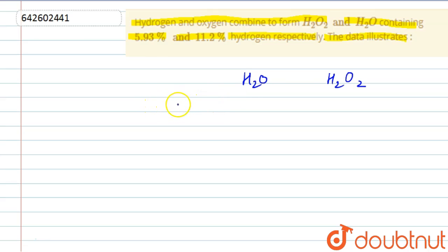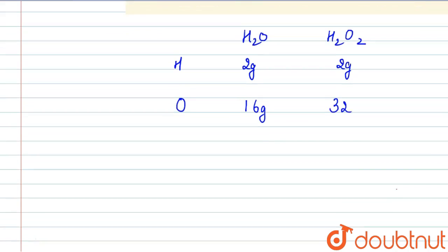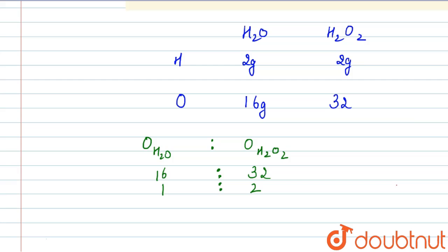In H₂O, hydrogen is 2 grams and oxygen is 16 grams, whereas in H₂O₂, hydrogen is 2 grams and oxygen is 32 grams. Since hydrogen is the same in both, we take the ratio of oxygen in H₂O to oxygen in H₂O₂, which gives us 16:32, that is 1:2 — a simple whole number ratio.